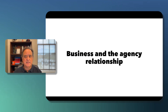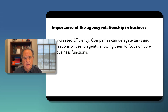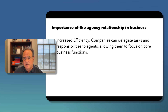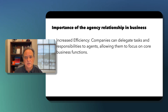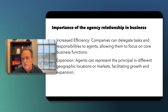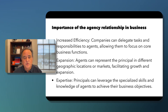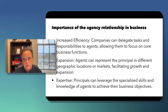Agency is very important in business, in large part because it permits increased efficiency — companies can delegate tasks and responsibilities to agents and focus on their core business functions. Agents can allow for expansion by representing the principal in different geographic locations or markets. And principals can leverage the specialized skills and knowledge of agents, their expertise, to achieve their business objectives.